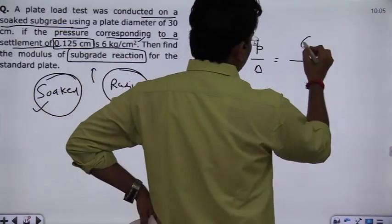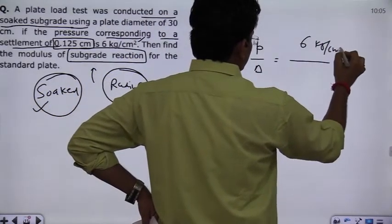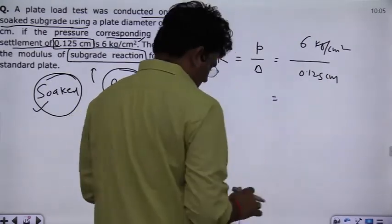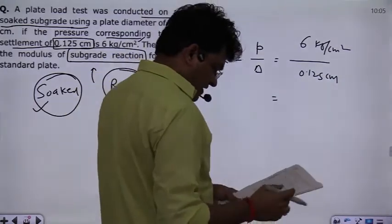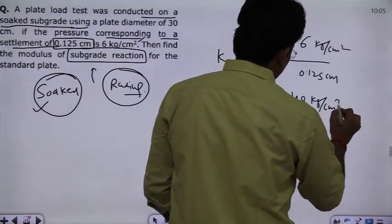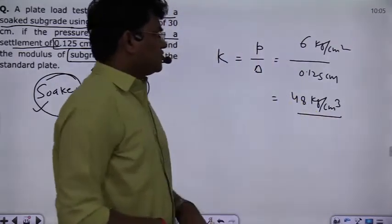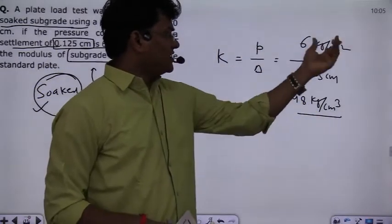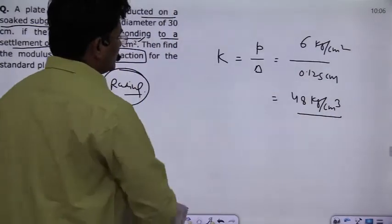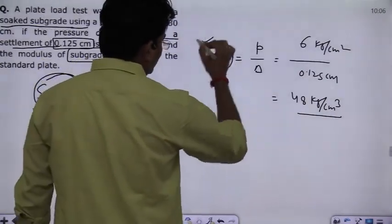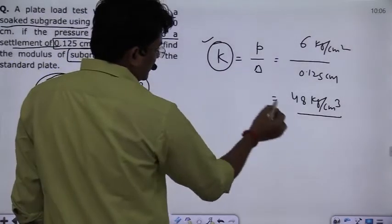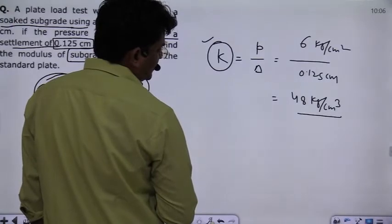p is given in the question. This is 6 kg per cm² divided by 0.125 cm. So here you will get k. The value of k is equal to 48 kg per cm³.